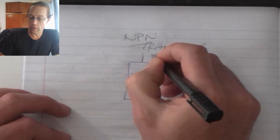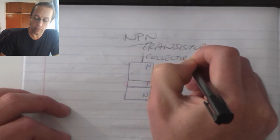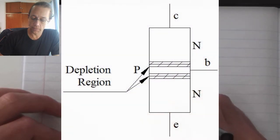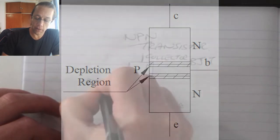The top N-type material is my collector. Bottom N-type material is my emitter. And the middle P-type material is called my base.